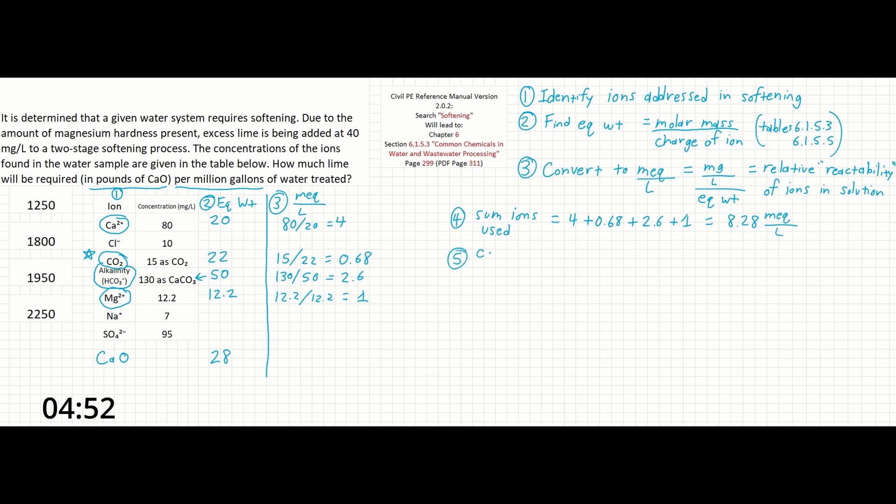For step 5, we can convert this reactable number back to calcium oxide or CaO. That's why we took the equivalent weight down of 28 before. So multiplying 8.28 milliequivalents per liter times 28 milligrams per milliequivalent will give us 231.84 milligrams per liter.